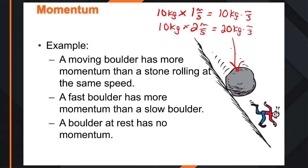The faster-moving boulder has more momentum than the slower-moving one. And if that boulder came to a stop, it would no longer have any momentum. Why? It's not because the mass changed — it's because there is no more velocity associated with it.